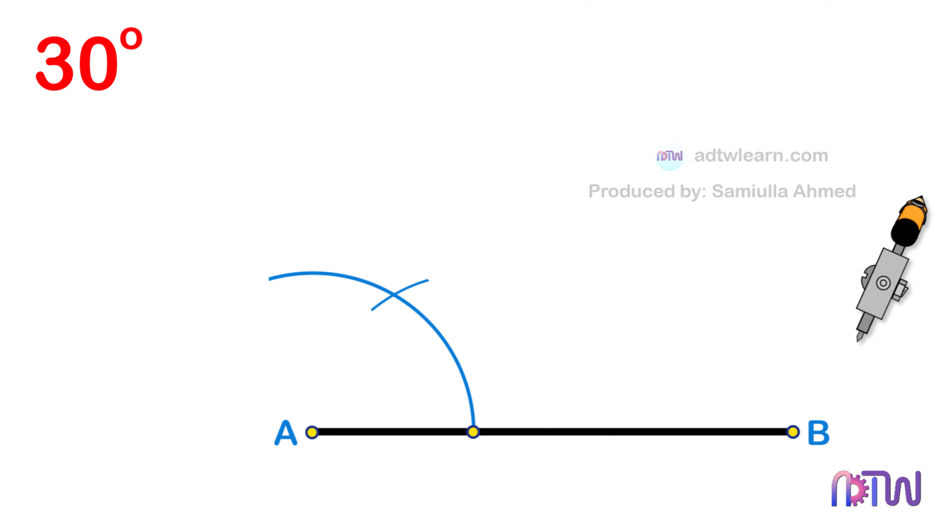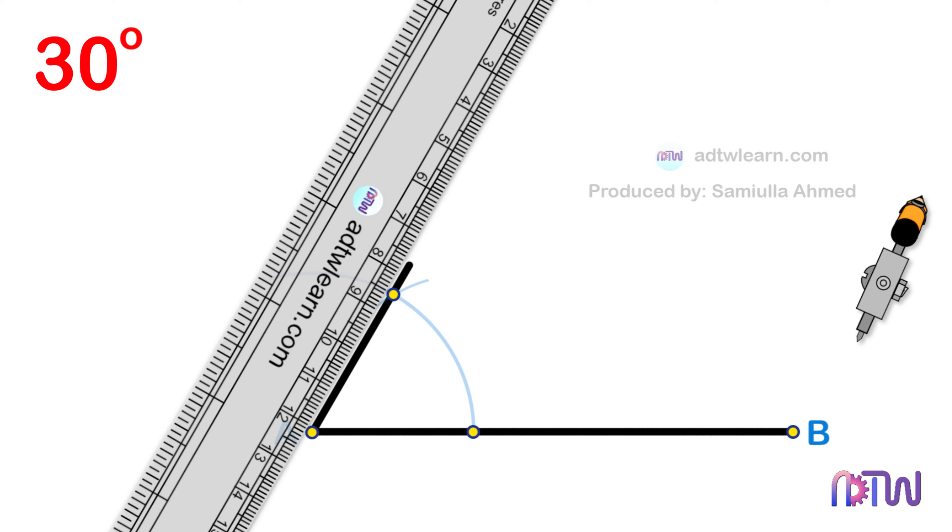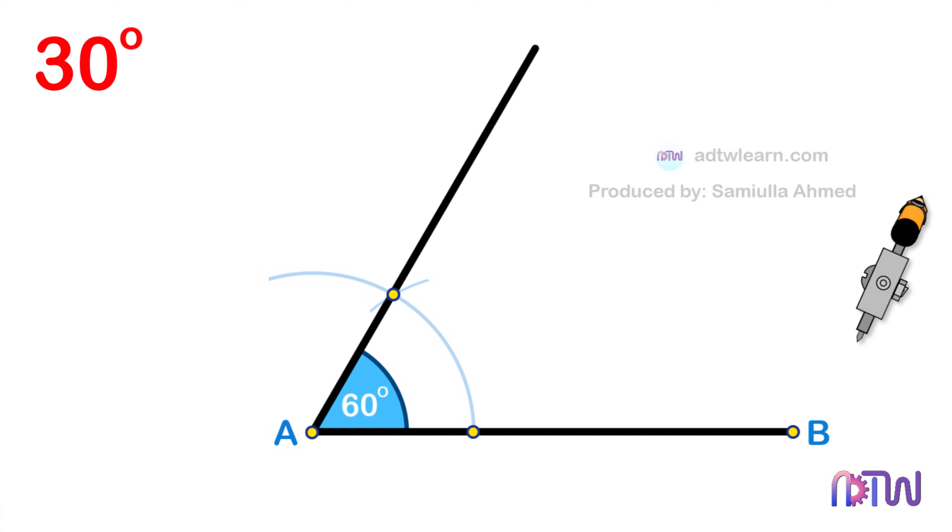Draw a line passing through this intersection point from the endpoint A of the line segment. This forms a 60 degree angle.